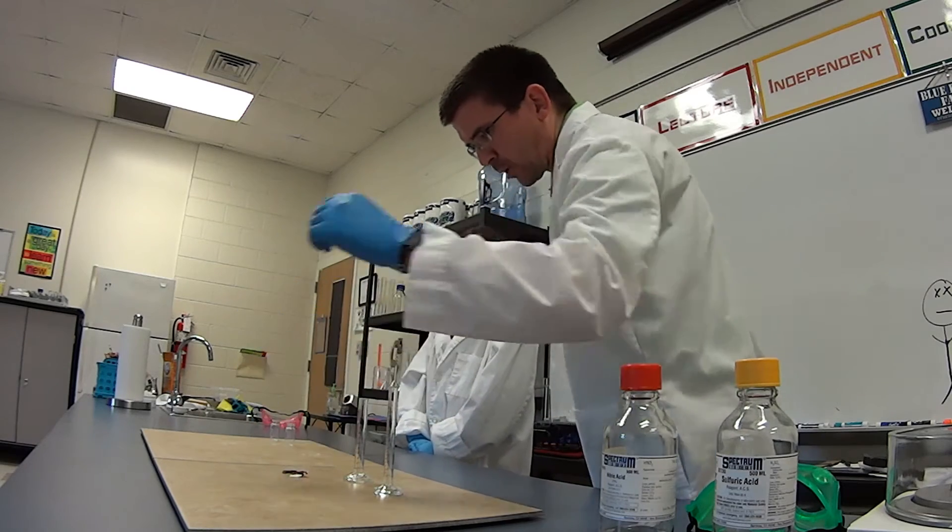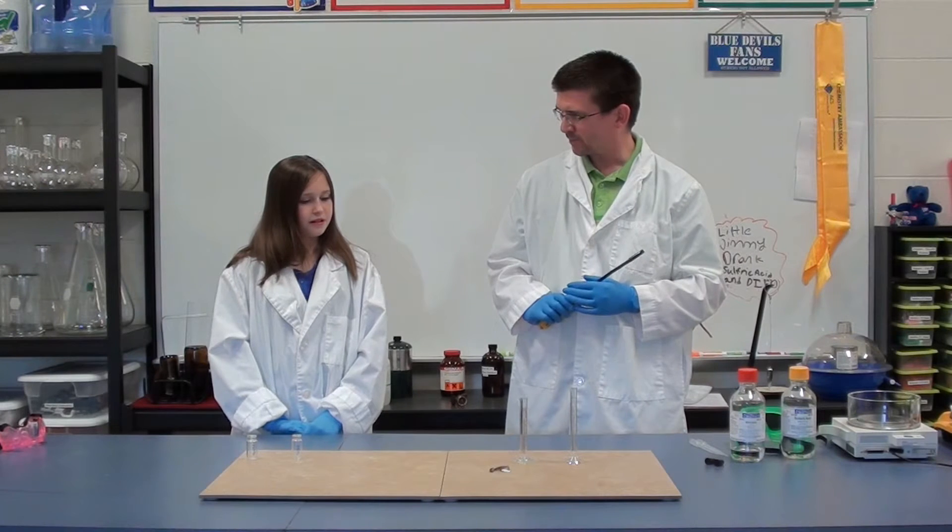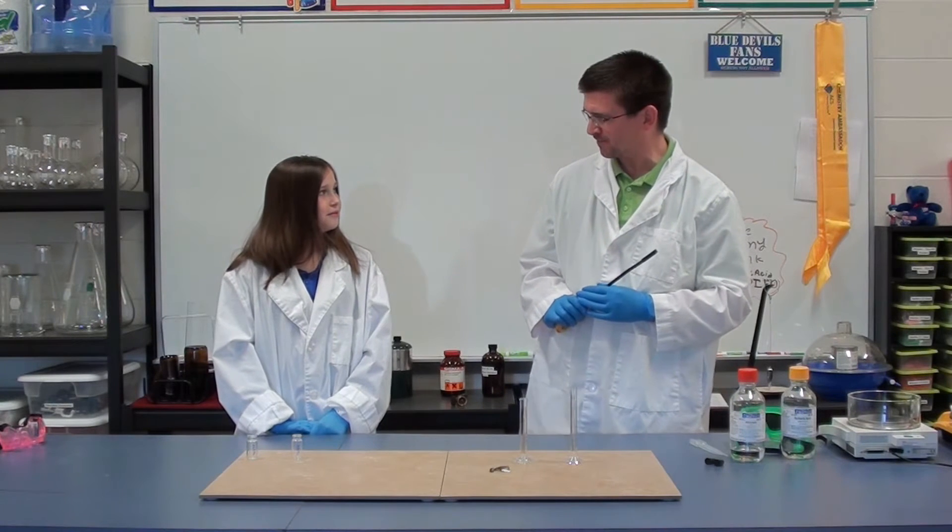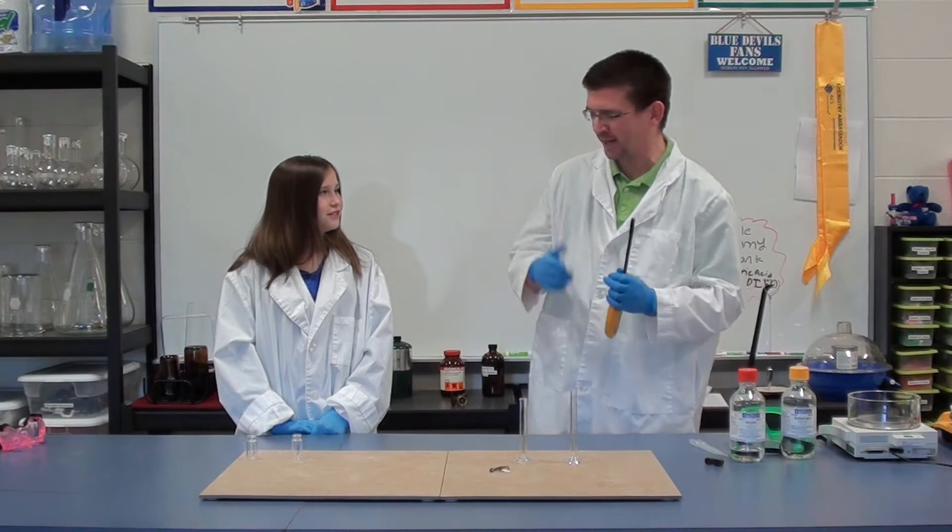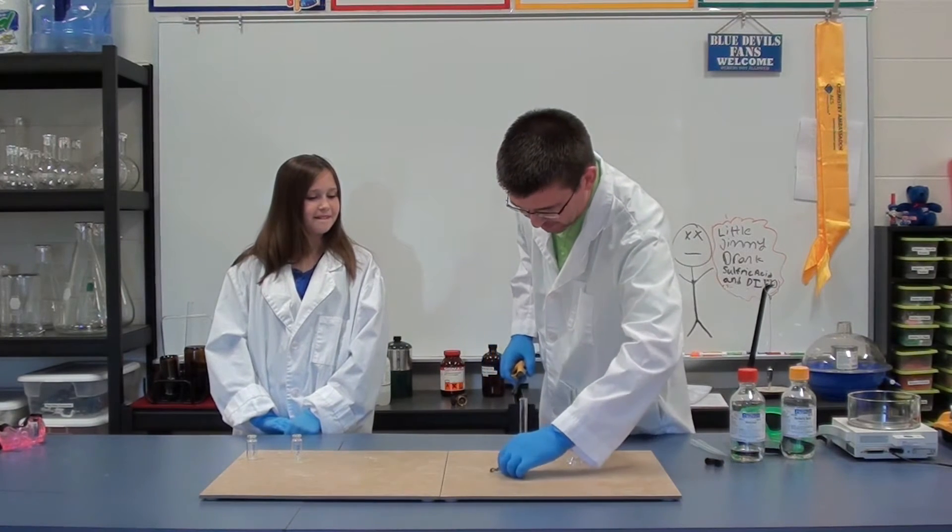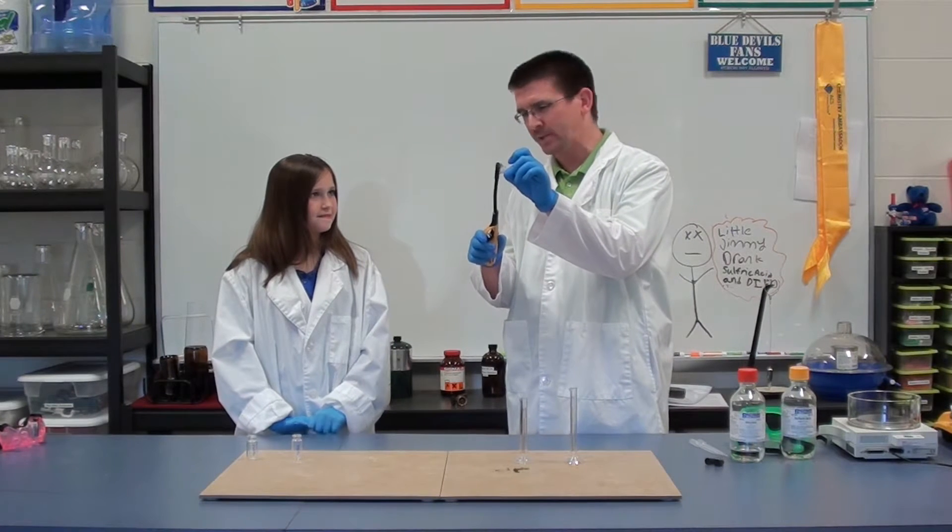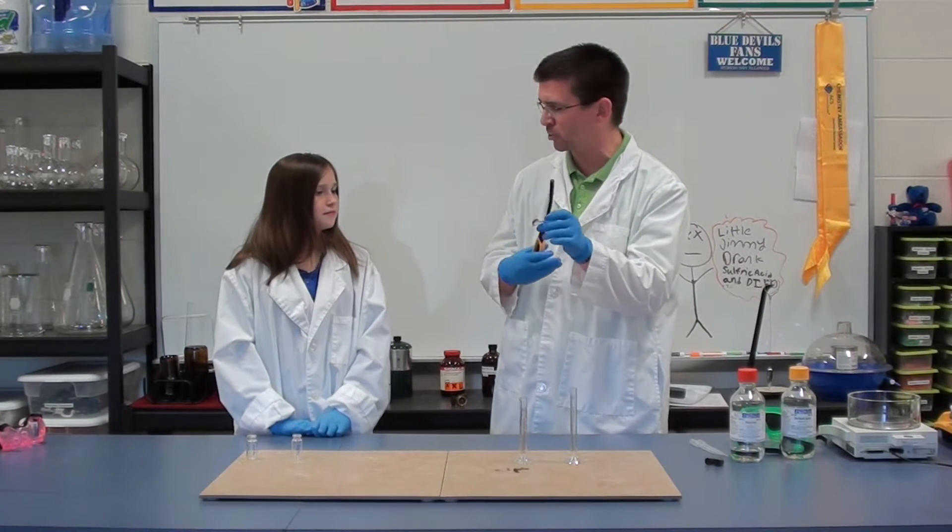So basically we know also that paper products come from what? Do you know where our paper comes from? Trees. Yeah, trees and plants, right? It's plant fiber. Basically it's called cellulose. And you can see when it burns actually, it's got all those little kind of patterns in there. That's actually the cellulose that you're able to see.